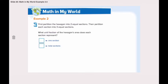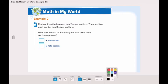What unit fraction of the hexagon's area does each section represent? We have six total sections, and each section is one. So we partitioned the hexagon into one-sixth.